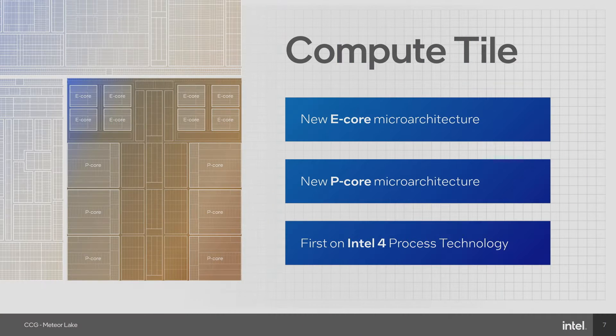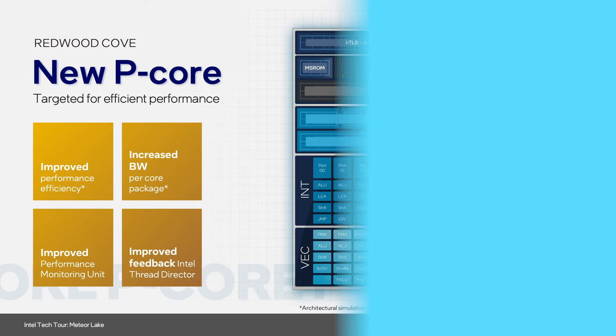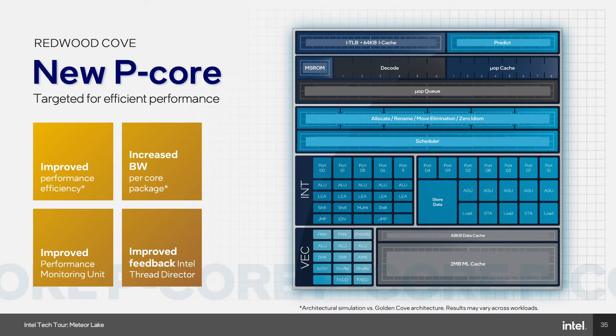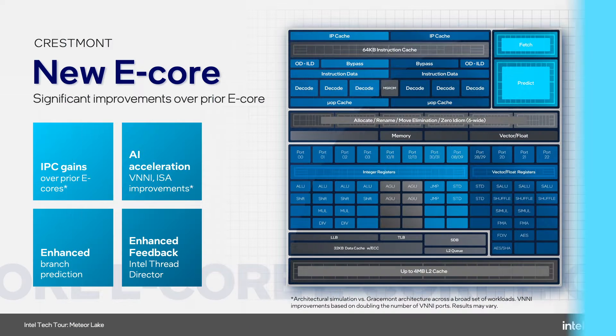We have had P-Cores and E-Cores since the Alder Lake timeframe, and we still have that on Meteor Lake as well. Our Compute tile has P-Cores which are designed for high performance in single-threaded limited cases, such as gaming and content creation. Then we have our E-Cores on the Compute tile, which are there to deliver multi-threaded performance under a given power envelope.